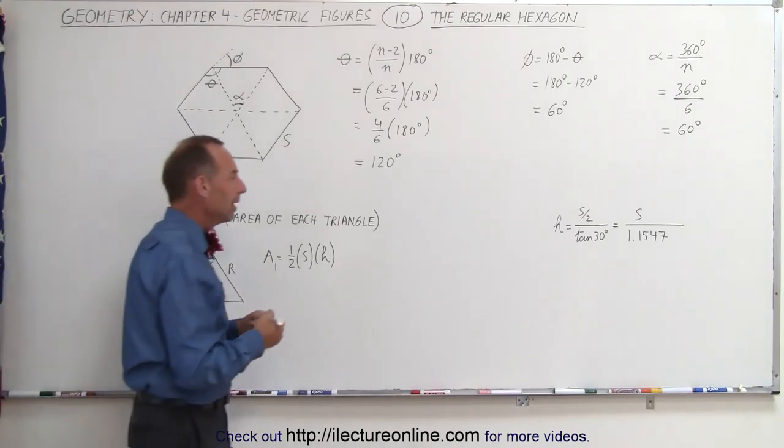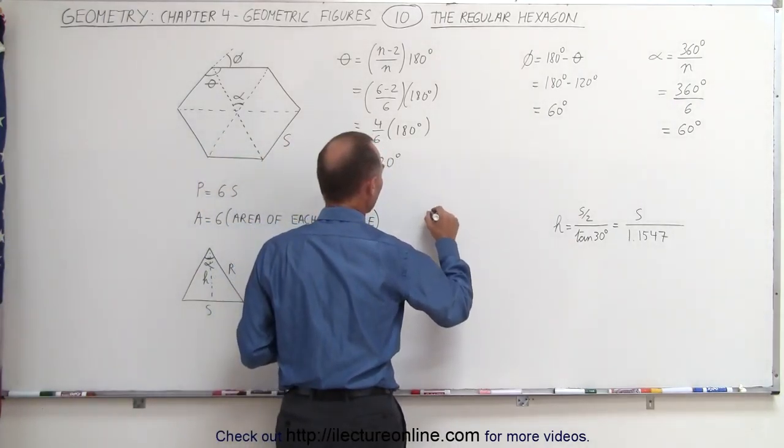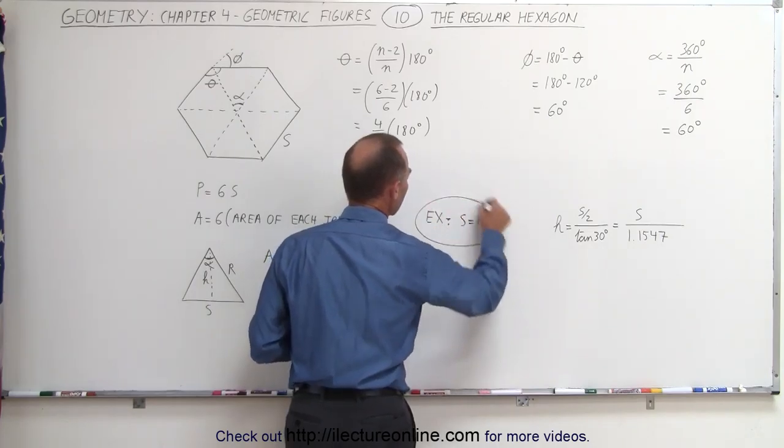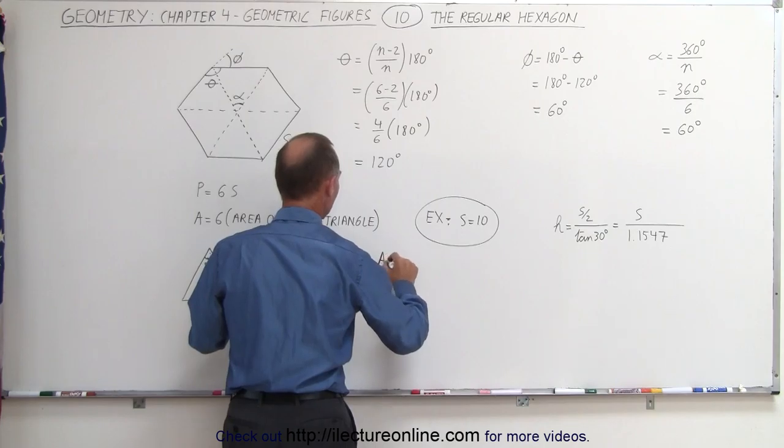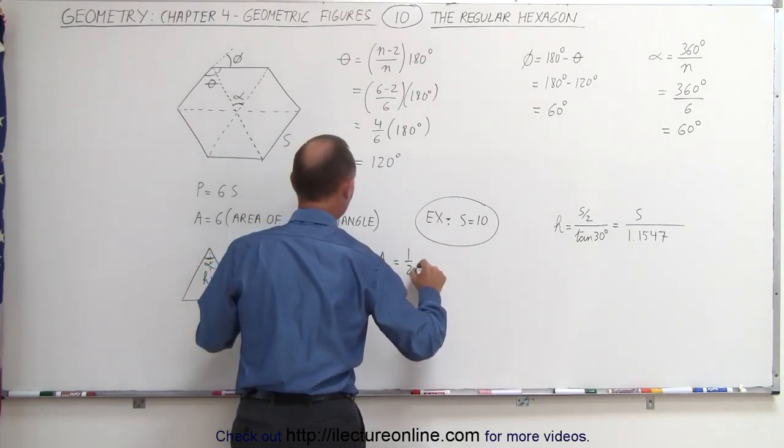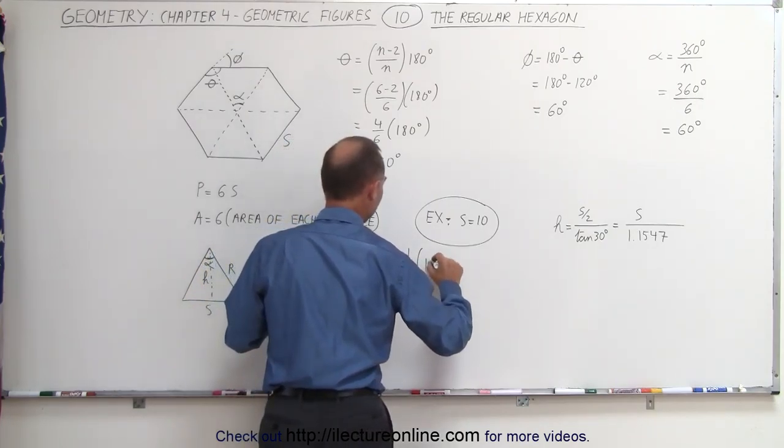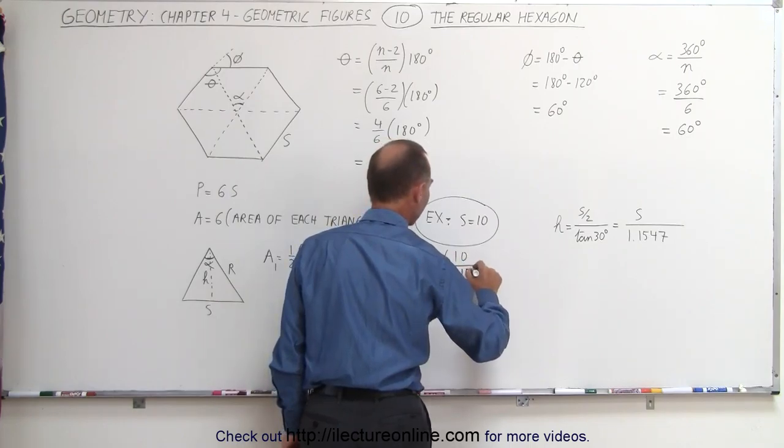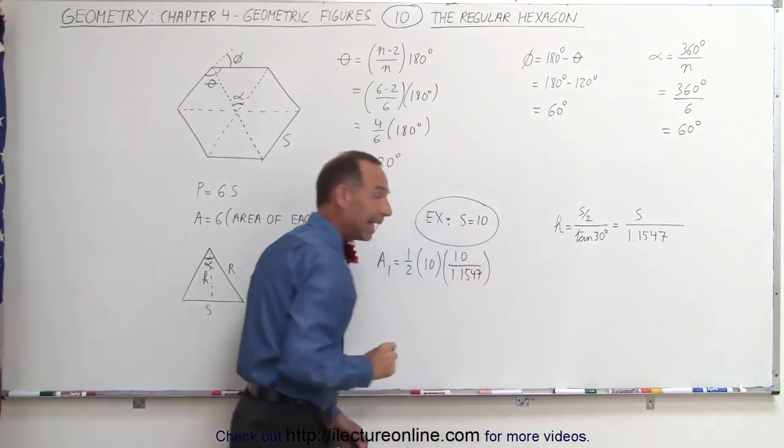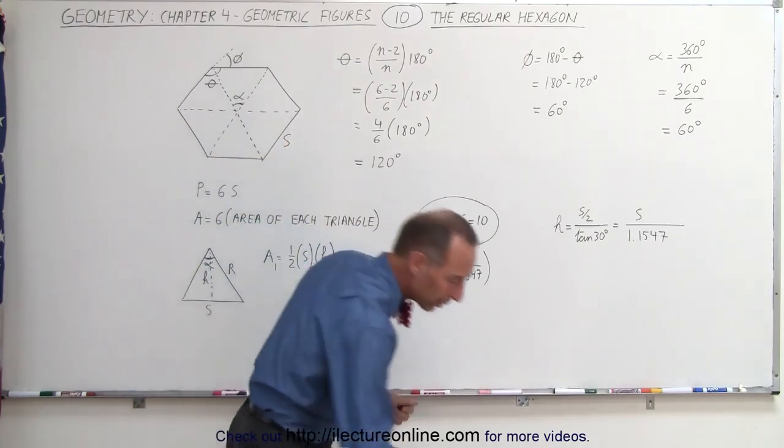Let's do an example. Let's again use, as an example, that S is equal to 10. To do that, we then say that the area of each triangle, A sub 1, is equal to 1 half times 10 times H, and H will be S over 1.1547. S would be 10 divided by 1.1547. This will be the area of each of the six triangles.